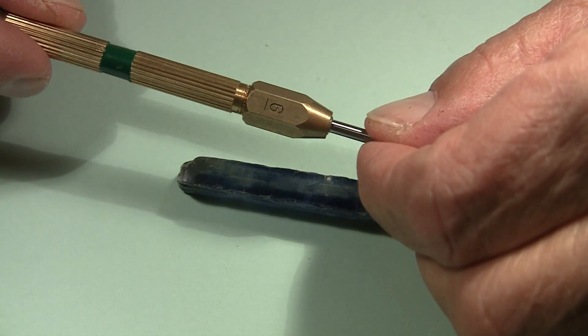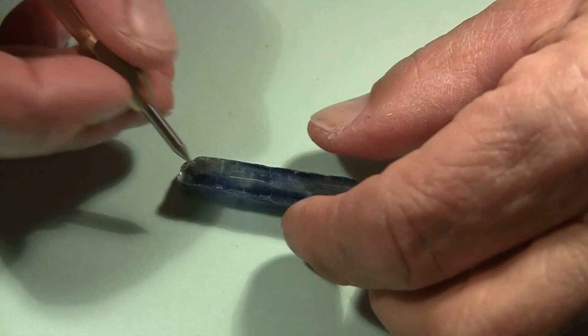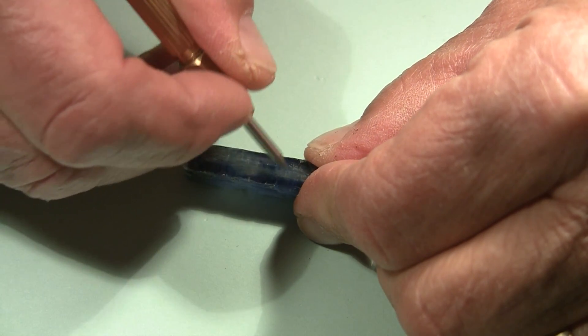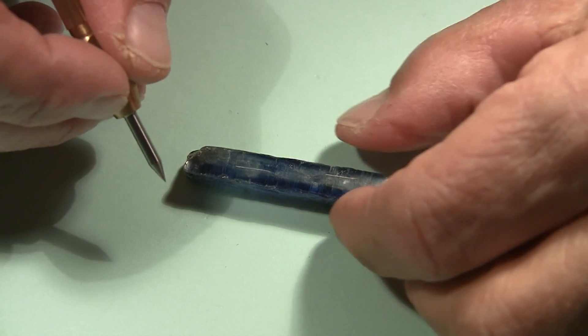I've got a hardness point here. This is the number 6. And in this direction right here, I'll try to scratch it. This slides across the surface there, not leaving a scratch.